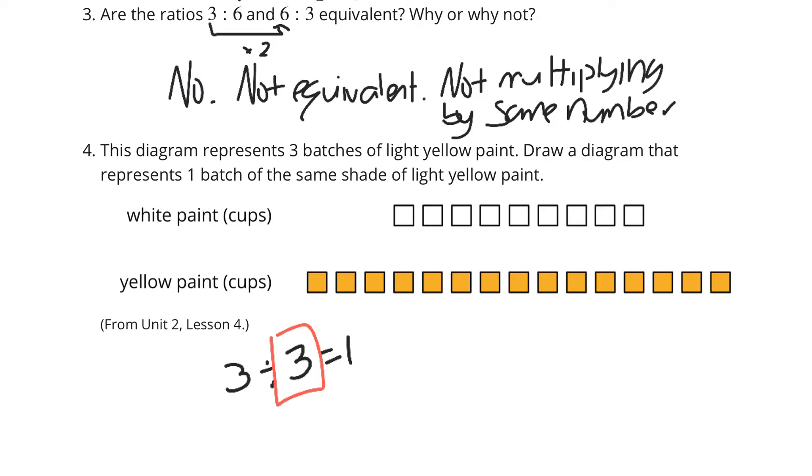Well, right now I have 9 cups of white, so if I divide that by 3, I'll get 3 cups of white. And for this yellow, I have 15. So, 15 divided by 3 is going to be 5.